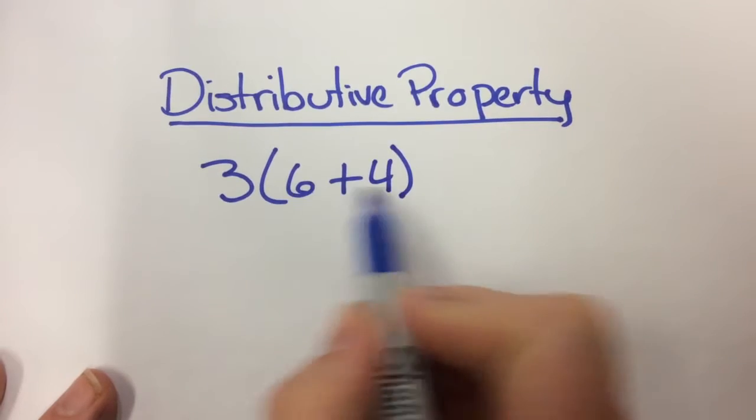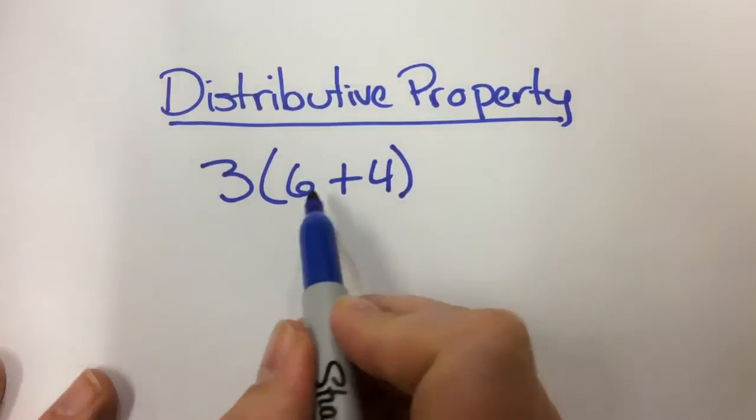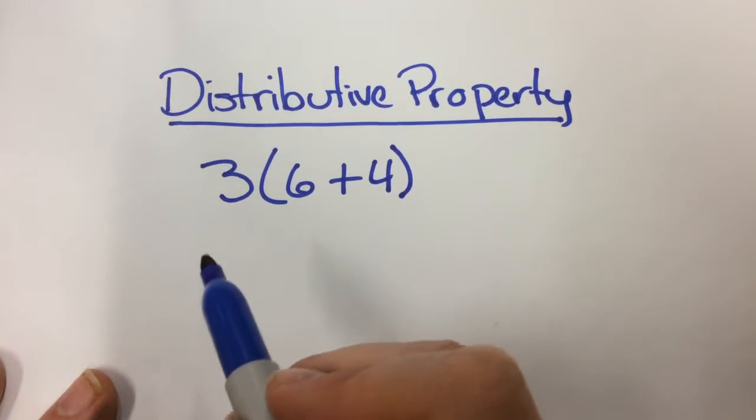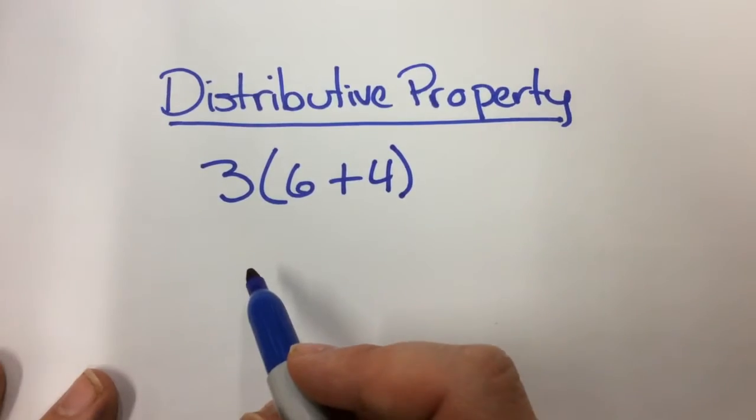So what I'm actually looking at is this is really 3 times the quantity of 6 plus 4. So now I could do the parentheses first and do 6 plus 4 equals 10 and then multiply that, but we're really talking about the distributive property. So I want to show you the notation that I'm looking for when you're doing an assignment using the distributive property.